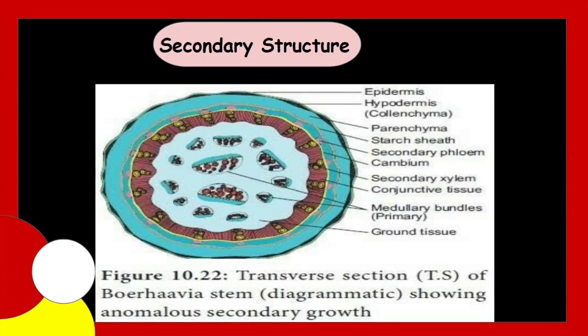The primary structure shows outermost single-layered epidermis followed by chlorenchymatous and collenchymatous hypodermis. The cortex is few-layered and consists of chlorenchymatous and parenchymatous cells with intercellular spaces. And endodermis is distinct, single-layered and consists of thin-walled tubular cells. And pericycle consists of thin-walled living cells.